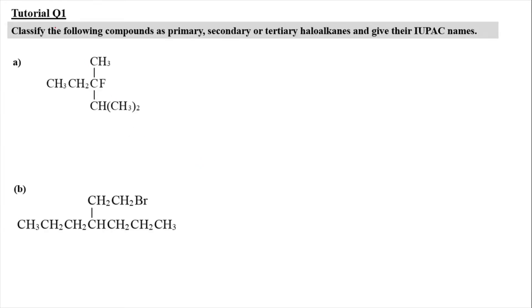So for tutorial question 1, we have to classify the following compound as primary, secondary or tertiary haloalkane and give their IUPAC name. So for structure A, we were given this kind of structure.